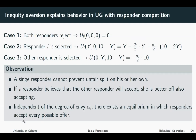This has an important consequence: independent of the degree of envy alpha I, there exists an equilibrium in which responders accept every possible offer. Suppose you know that the other responder is always accepting — in this case you have no incentive to reject, because you will not be better off even if the proposal offers an amount of zero. If Y is zero, you are just indifferent between trading yourself and observing the other responder trade.